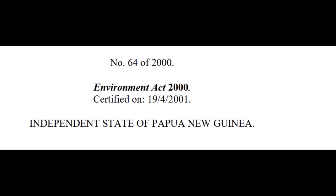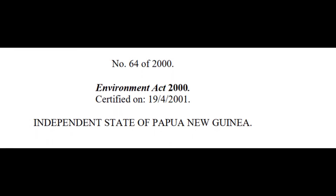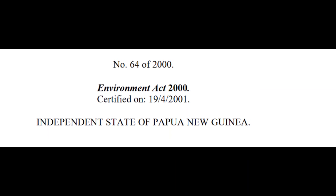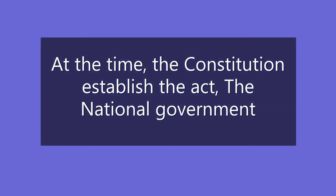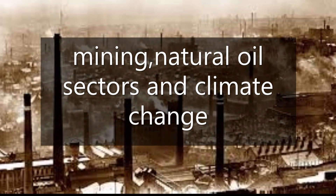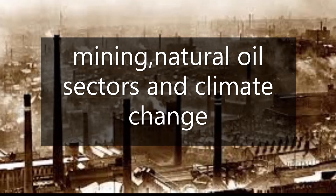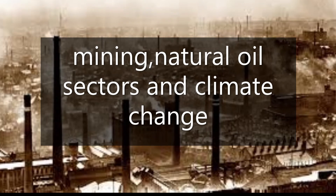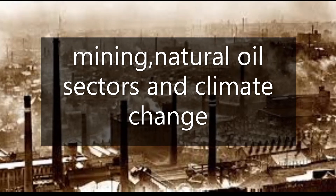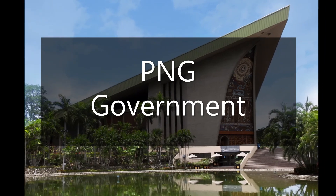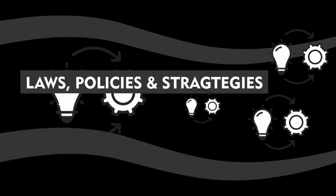We can draw from it that the Environmental Act 2000 has been enforced and is still valid; however, the implementation of the Act through land pollution caused by dumping, littering, and betelnut spittle has not been fully accomplished. At the time the Constitution established the Act, the National Government mainly focused this Act on the mining, natural oil sectors and climate change. Most of the policies are directed towards implementation of guidelines to protect, minimize effects, and maintain practices to prevent climate change. The Papua New Guinea government has failed to incorporate and develop strategies, policies, and laws to address land pollution. Therefore, it still remains a challenge of the environmental act.